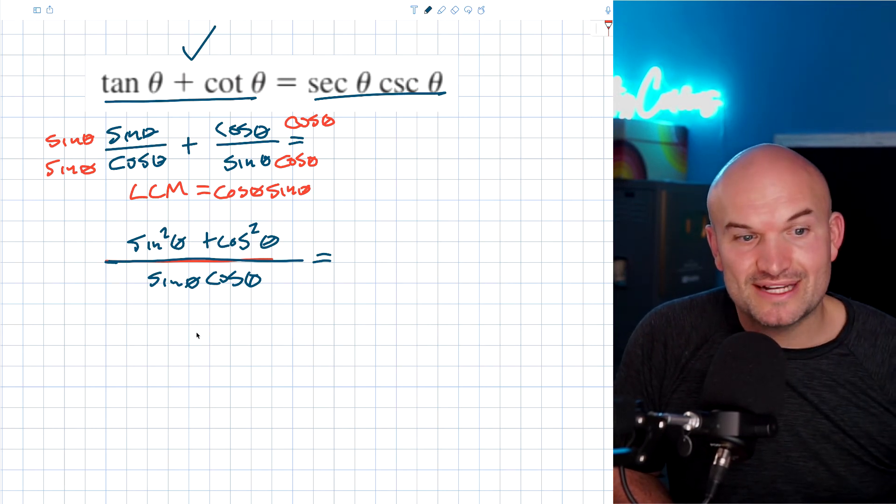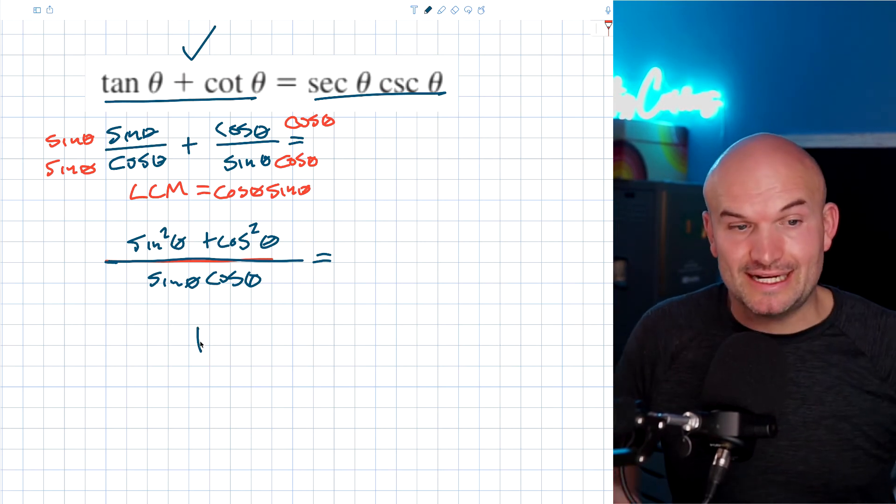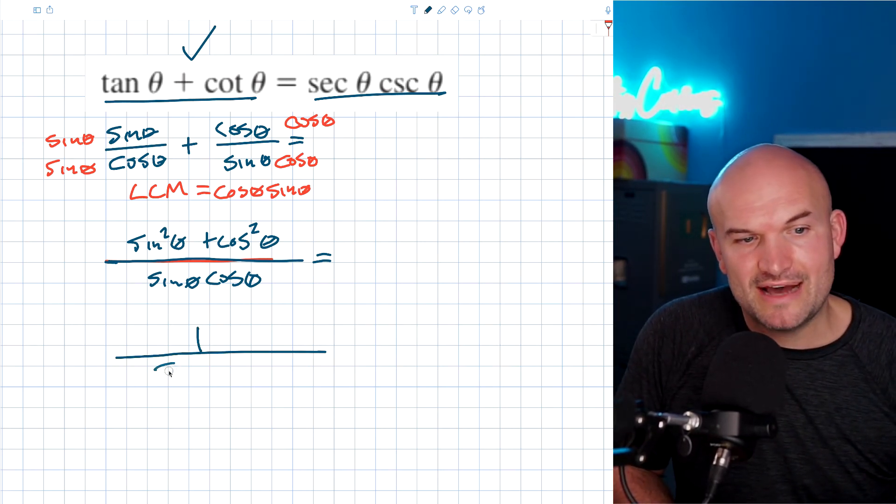Now the cool thing here is sine squared of theta plus cosine squared of theta is equal to what? It's equal to one. So therefore I can simplify this using my Pythagorean identity.